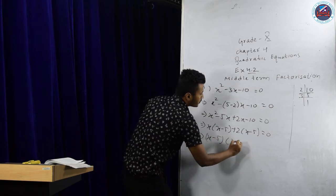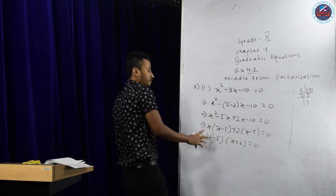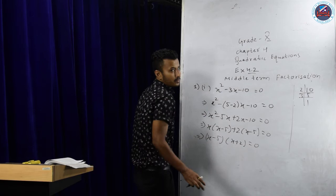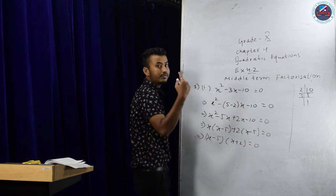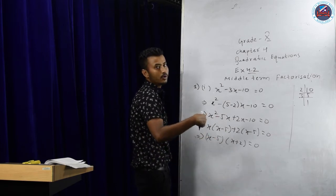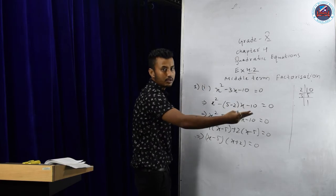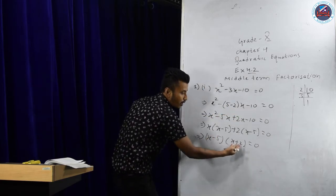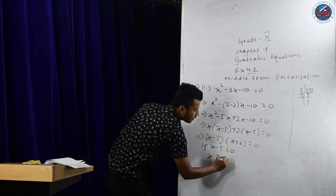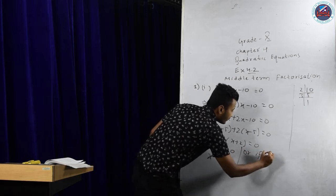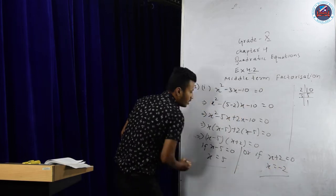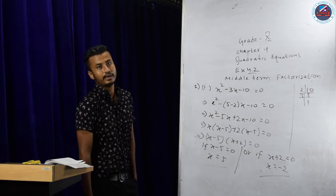Next, take x common from the first pair: x(x minus 5), and 2 common from the second pair: plus 2(x minus 5), equals zero. This becomes (x minus 5)(x plus 2) equals zero. The product of two terms is zero only if one of them is zero. So either x minus 5 equals zero, giving x equals 5, or x plus 2 equals zero, giving x equals minus 2. These are the two roots — this is middle term factorization.